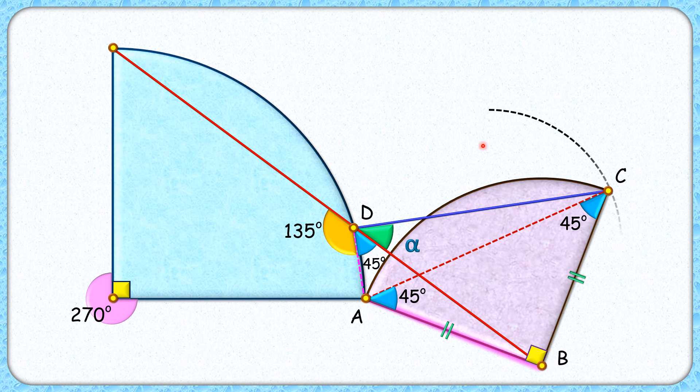Now if we consider the chord CB, this chord CB is subtending an angle of 45 degrees at point A. By theorem, in the remaining part of the segment it will subtend the same angle, 45 degrees.